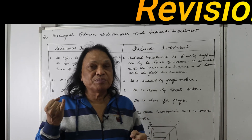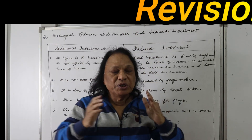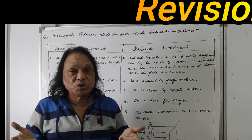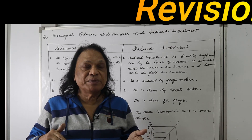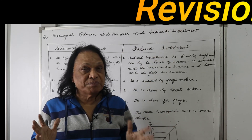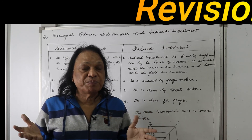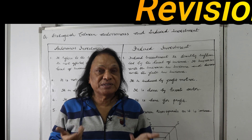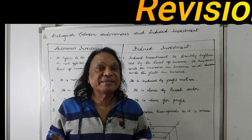Final revision: there are two kinds of investments — autonomous and induced. Autonomous investment is done by the government, not with a profit motive, does not change with income, is done for social welfare, and its curve is parallel to the x-axis — it is income inelastic. Induced investment is done by the private sector, with the profit motive, changes with income (goes up when income rises, comes down when income falls), and its curve is rising upwards — it is income elastic.